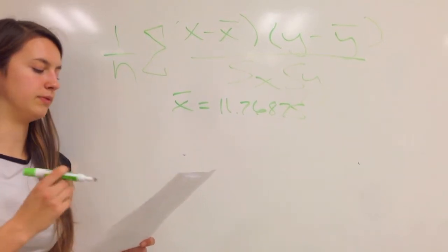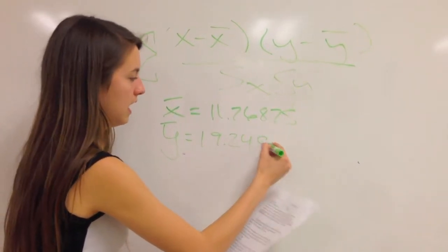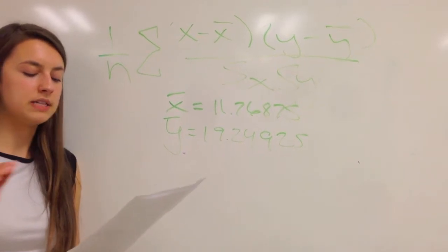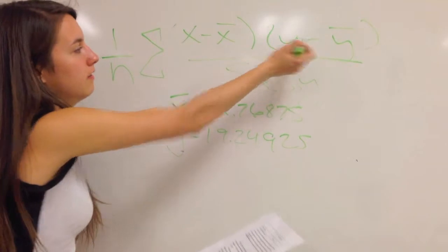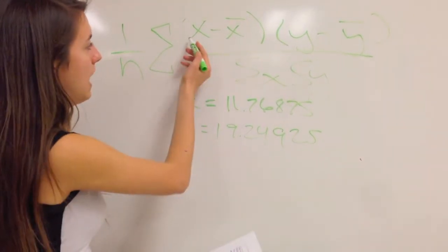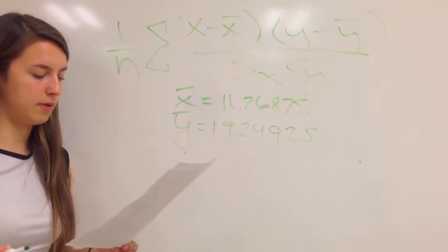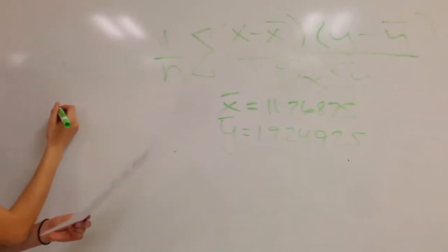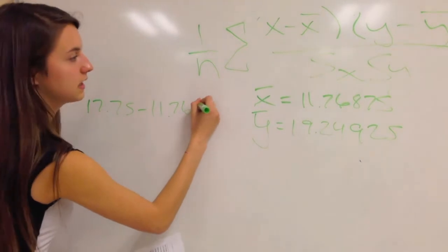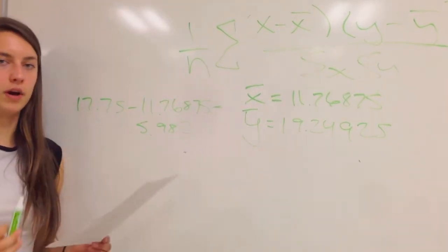I'm going to do the same thing with the y-points, which gives me y-bar. y-bar in this case is 19.24925. Now I need to use the x-bar and y-bar to find out if the points of my data, or the points of my graph, if they're positive or negative, which is this part of the equation. For each x-point, I'm going to subtract x-bar from it. So x minus x-bar, and this gives me the value of each point. So it's going to be either positive or negative. One example would be I have a data point of 17.75, and I subtract 11.76875, which equals 5.982. So this point would be positive.